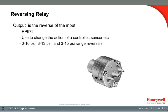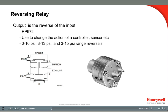A reversing relay does just that — it reverses a pneumatic air signal. This relay might be used to reverse a branch line signal when the actuator's action is out of sync with the rest of the control logic. Or it can be used to reverse any pneumatic pressure signal, such as sensors, controllers, or another relay's output. Port 1 is for main supply air, and port 3 is the pilot signal from the branch line that needs to be reversed. Port 2 is the output with the reversed signal, and port 4 is the exhaust.